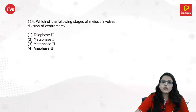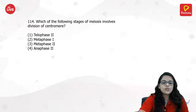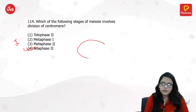Which of the following stages of meiosis involves the division of centromere? The division of centromere happens in anaphase 2. After the second division it happens in anaphase 2.